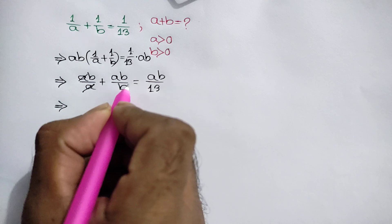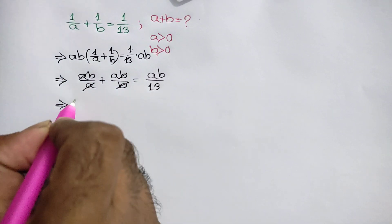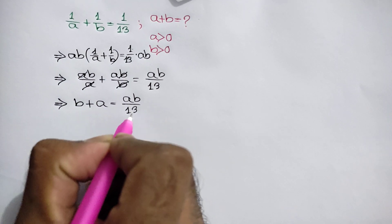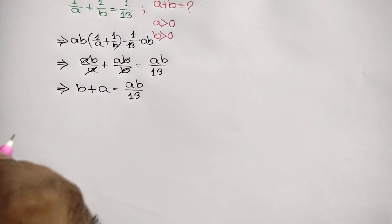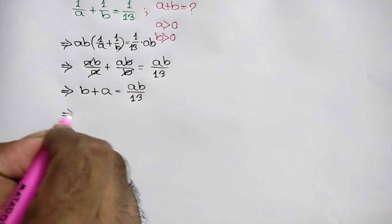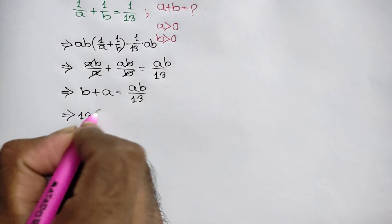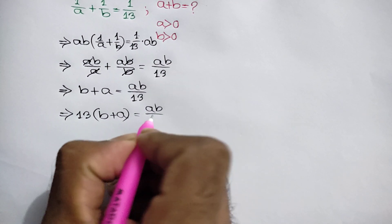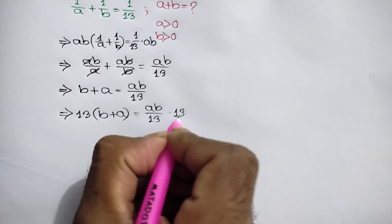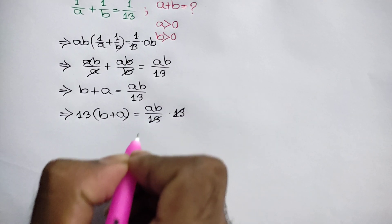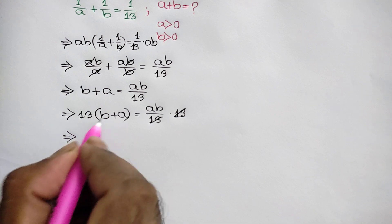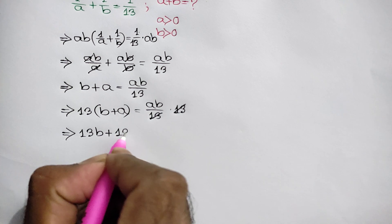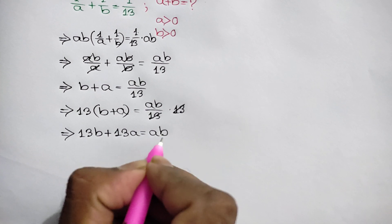The a cancels out and b cancels out, so we get b plus a is equal to ab over 13. Now multiplying both sides by 13, we get 13 times b plus a equals ab over 13 times 13, and the 13s cancel, giving us 13b plus 13a is equal to ab.